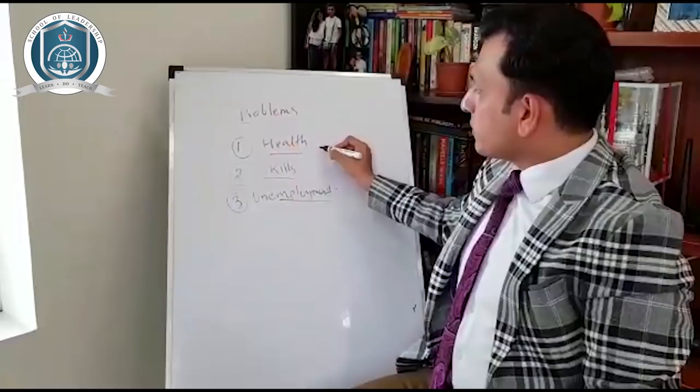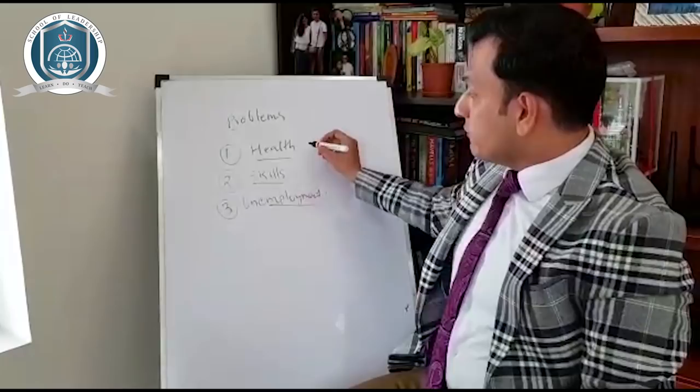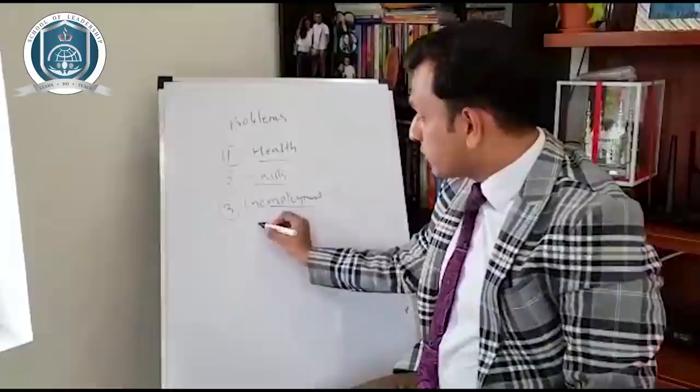Now we know these three problems exist, but the point is not about counting problems. We have two choices. Choice number one: we can be part of these problems. Choice number two: we can be part of the solution.